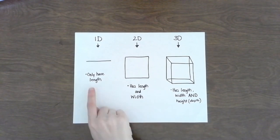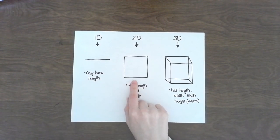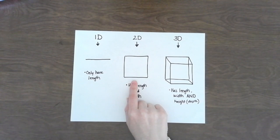A line is considered one-dimensional because it only has length. A shape is considered to be two-dimensional because it has both length and width. Some good examples would be a triangle, a square, a circle, a rectangle.